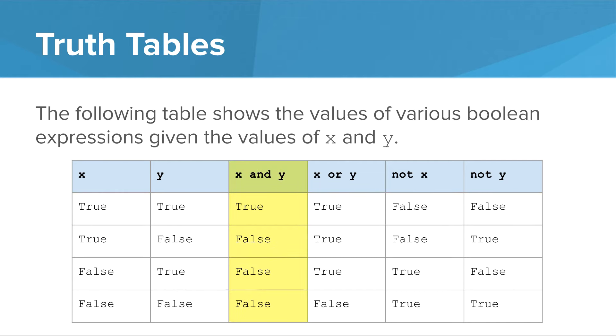We can look down the x and y column and notice that the only place that x and y is true is when both x and y is true, otherwise it's false each time. Similarly, x or y is true every time except when both x and y are false. And the not x and the not y are always just the opposite of what x and y values are.